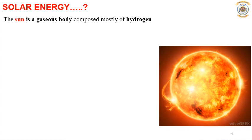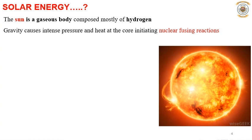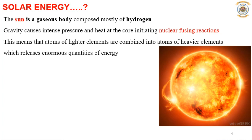Solar energy is radiated from the sun. The sun is a gaseous body composed mostly of hydrogen. Gravity causes intense pressure and heat at the core, initiating nuclear fusion reactions. Nuclear fusion is where atoms of lighter elements are combined into atoms of heavier elements, which releases an enormous source of energy that is radiated from the sun and reaches the earth.